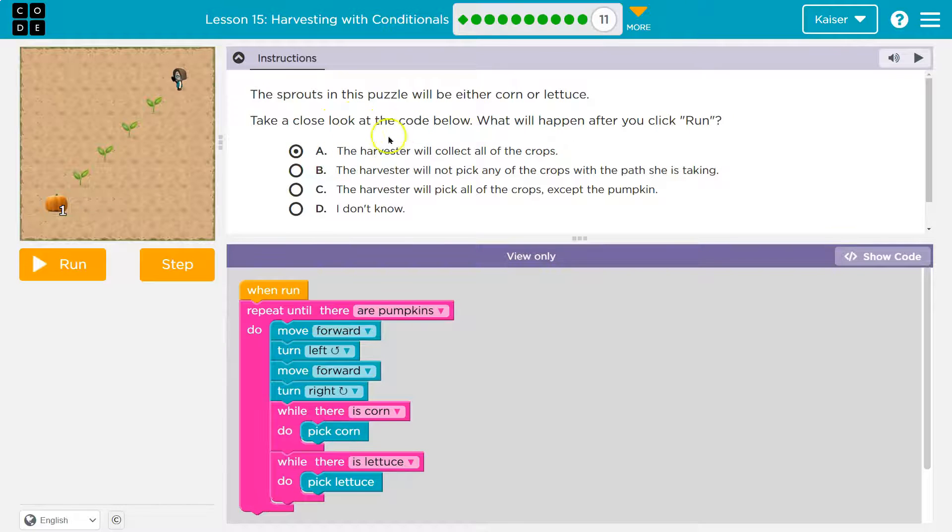Now, take a close look. I don't know what it is yet. Take a close look at the code below. What will happen when you click run? All right, well, when I click run, repeat until there are pumpkins. Well, are there currently pumpkins? Nope.